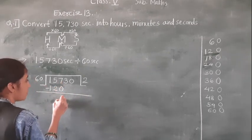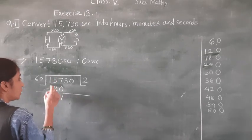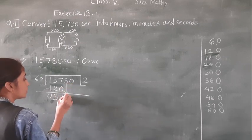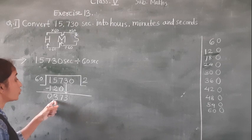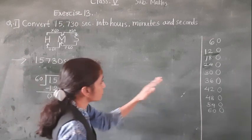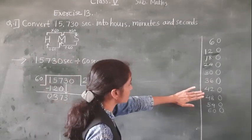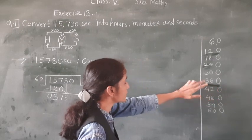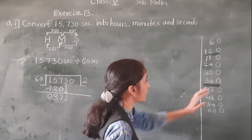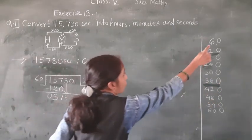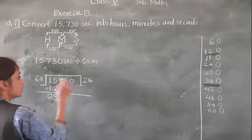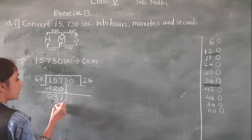7 minus 0 is 7, 5 minus 2 is 3, 1 minus 1 is 0. Bring down 3 — now 373. Which number comes? Less than 373, the nearest is 360. Count: 1,2,3,4,5,6 — so write 6. 60×6=360.